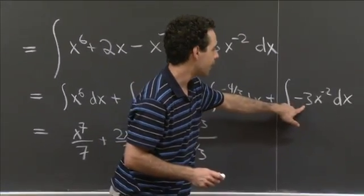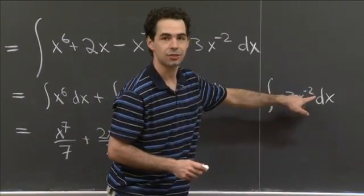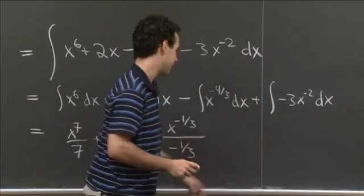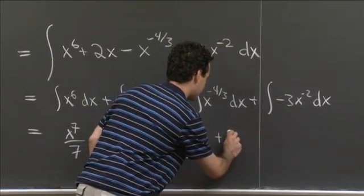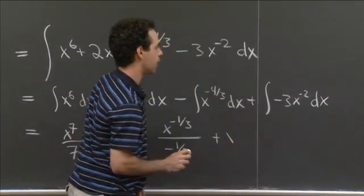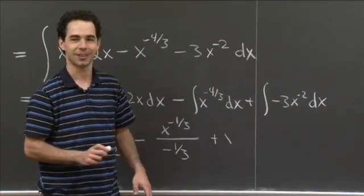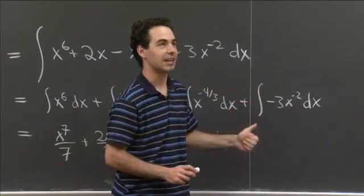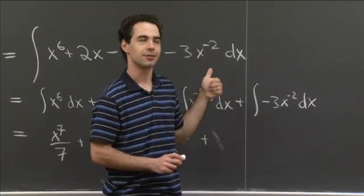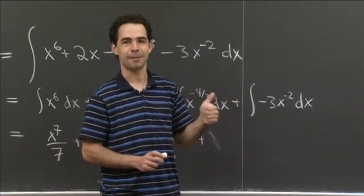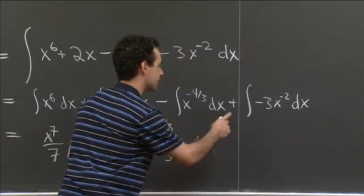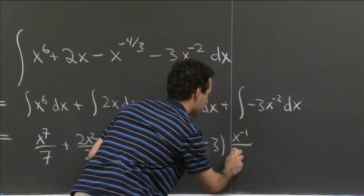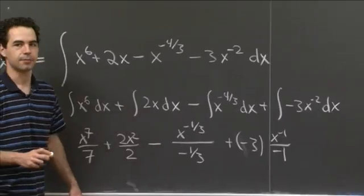And finally, here, minus 3x to the minus 2. Just like this first one, you might recognize that right off as the derivative of x to the minus 3. So this is plus—oh, ha ha. You could do that if you were completely confused, like me. So right, x to the minus 2, it increases by 1. When it increases by 1, you get minus 1, not minus 3. OK, good. So this is minus 3 times x to the minus 1 over minus 1. That's much better.